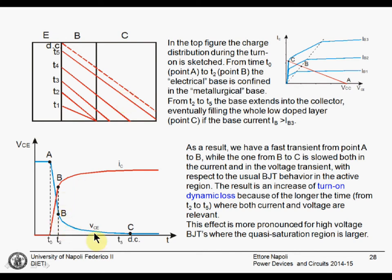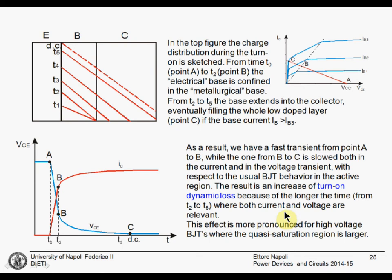The VCE reduces slowly during this phase, and the same happens for the current. This increases the turn-on dynamic losses, because during this time period VCE is still quite high — around 10 to 12 volts — while the current is almost at its maximum. Only once the on-state voltage drop becomes small is the dynamic loss low. This effect is more relevant for high-voltage BJTs, where the collector region is very wide.